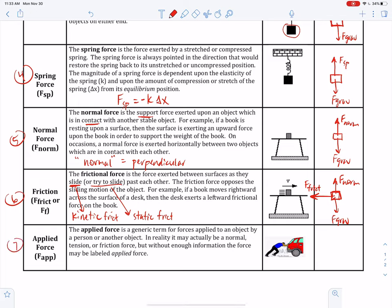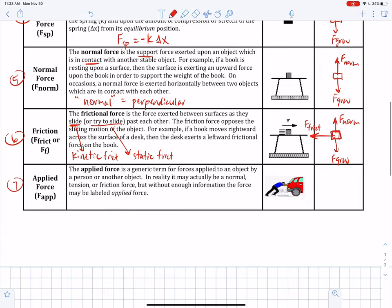Finally, number seven, a generic applied force. The applied force is a generic term for forces applied to an object by a person or another object. In reality, it may actually be a normal tension or friction force, but without enough information, the force may be labeled applied force. So the applied force is sometimes like a catch-all. I'm not sure what to call it, so I'm going to go with applied. But oftentimes, you can be more specific. You can say no. Specifically, it's a normal force or a tension force or a friction force.